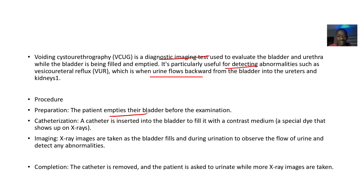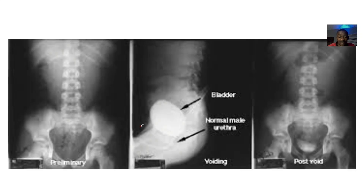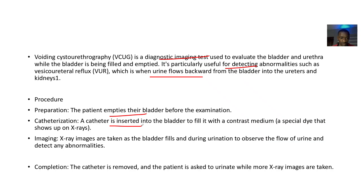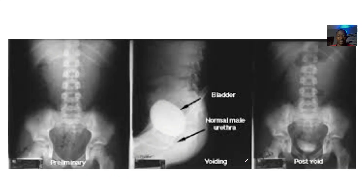For preparation, the patient empties their bladder before the examination. A catheter is then inserted into the bladder to fill it with contrast medium — a special dye to allow clear visualization. X-rays are taken as the bladder fills and during urination to observe urine flow and detect abnormalities. After the procedure, the catheter is removed and the patient urinates while more x-ray images are taken.